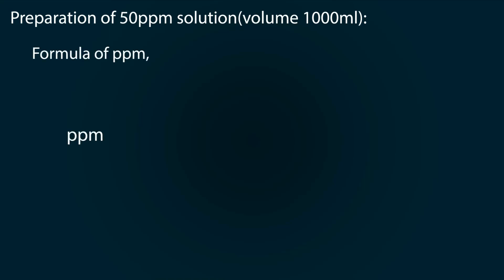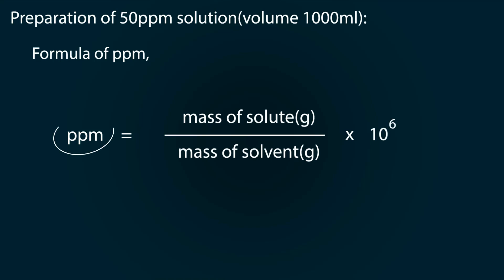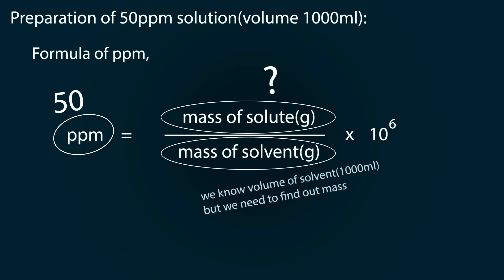Let's do some calculations. For a 50 ppm solution we have to find out the mass of solute and the mass of solvent. The formula for ppm is: mass of solute divided by mass of solvent, multiplied by 10 raised to the power of 6. We have 50 ppm, so we need to find the mass of solute, but first we need to find the mass of solvent for 1000 milliliters.